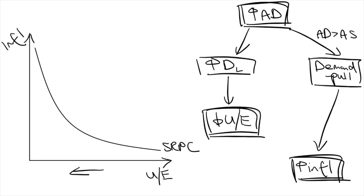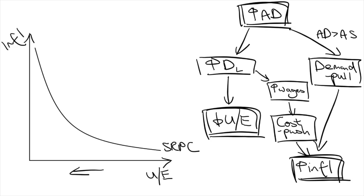Another reason for this inverse relationship is because with high demand for labor and low unemployment, workers and unions have greater bargaining power to negotiate for higher wages, and this can lead to cost-push inflation.